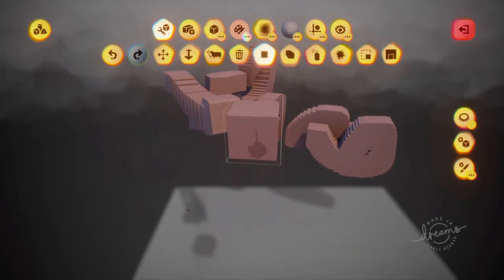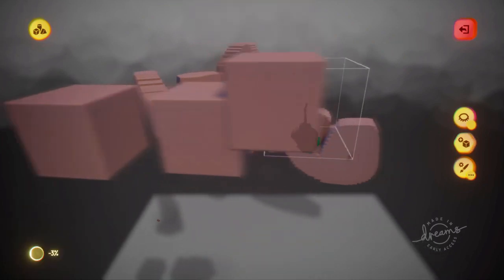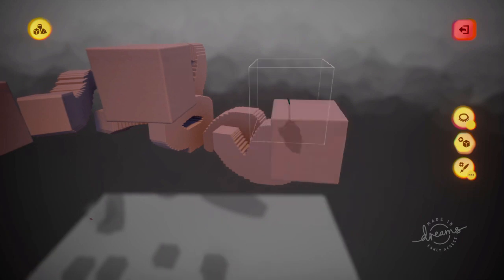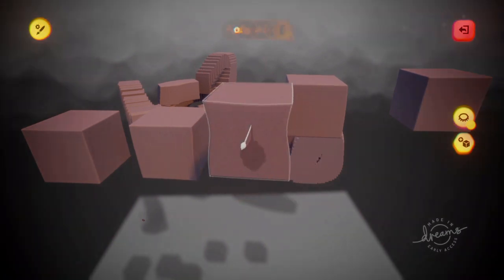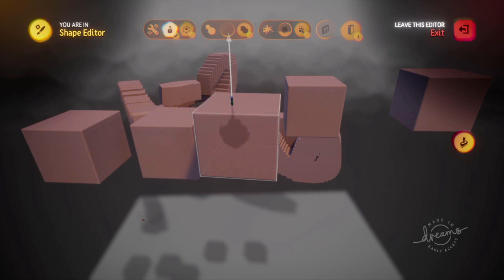Whereas stamp shape is just a single cube or whatever shape. So even if you hold R2 and then drag it around, nothing happens. It just stamps it at the original spot. Now stamp shape mode... If you go L1 and square, you can adjust the shape and stuff.